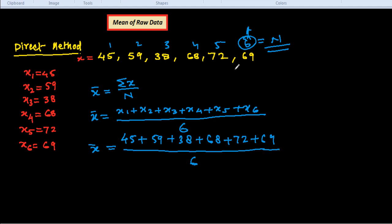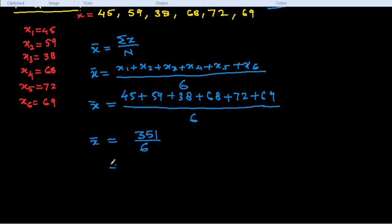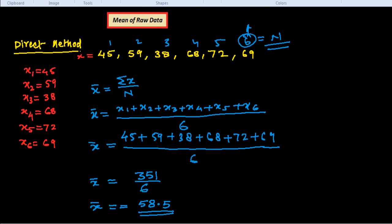So we calculate this: 45 + 59 + 38 + 68 + 72 + 69. We get here the summation of these all: 351 over 6, this is the x̄. If we simplify this x̄, we get 58.5, which would be the mean marks of the student in the examination. So in this way, we could easily find out by direct method the mean of raw data, arithmetic mean of raw data.